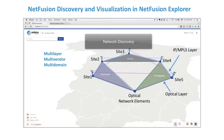Let's start with the visualization of the discovered Telefonica lab in the NetFusion Explorer UI. The optical layer is on the bottom and the IP MPLS layer is overlaid on top. Each object on the map represents a site. Here we have five sites containing both IP and optical objects and one unnamed site containing only optical network elements. The three shaded areas represent the optical domains: Coriant is in purple, ADVA is in gray.